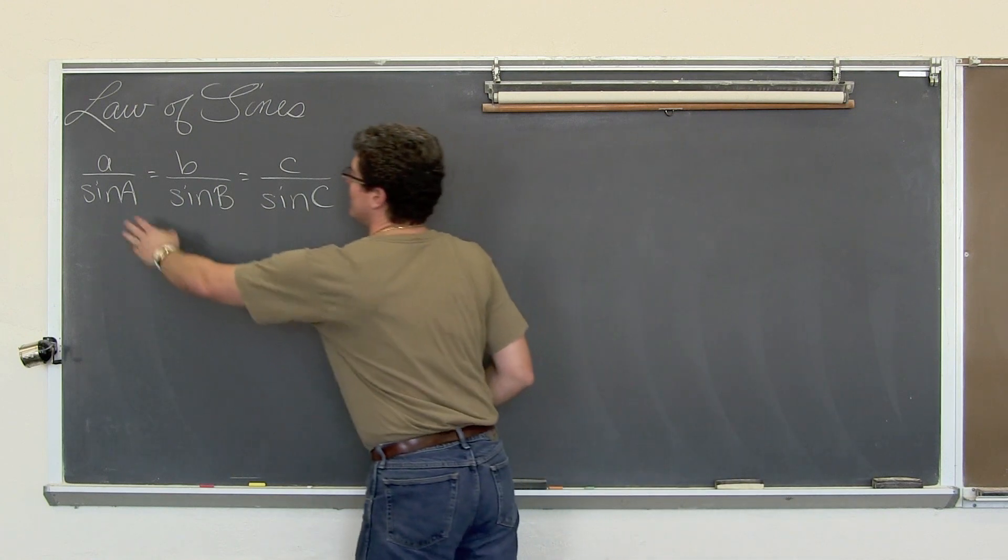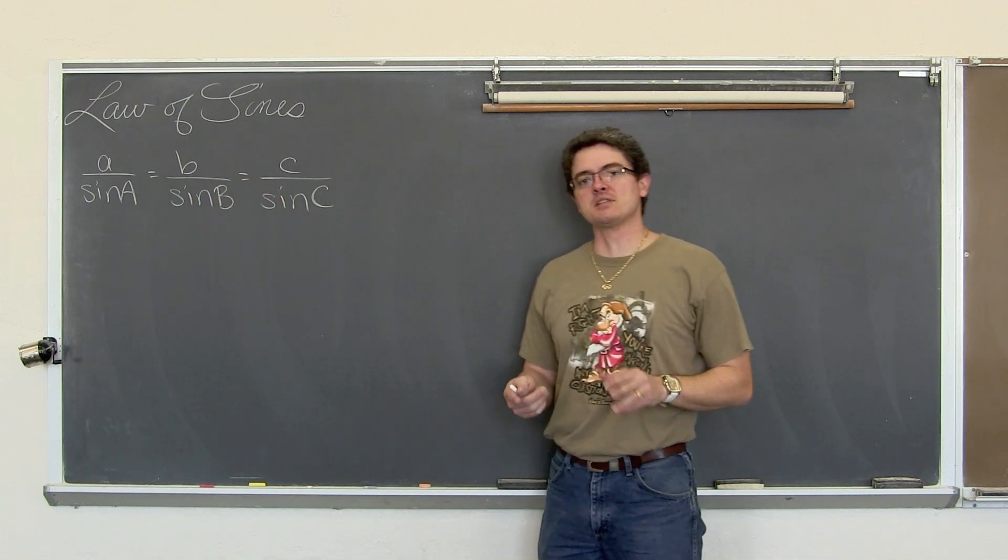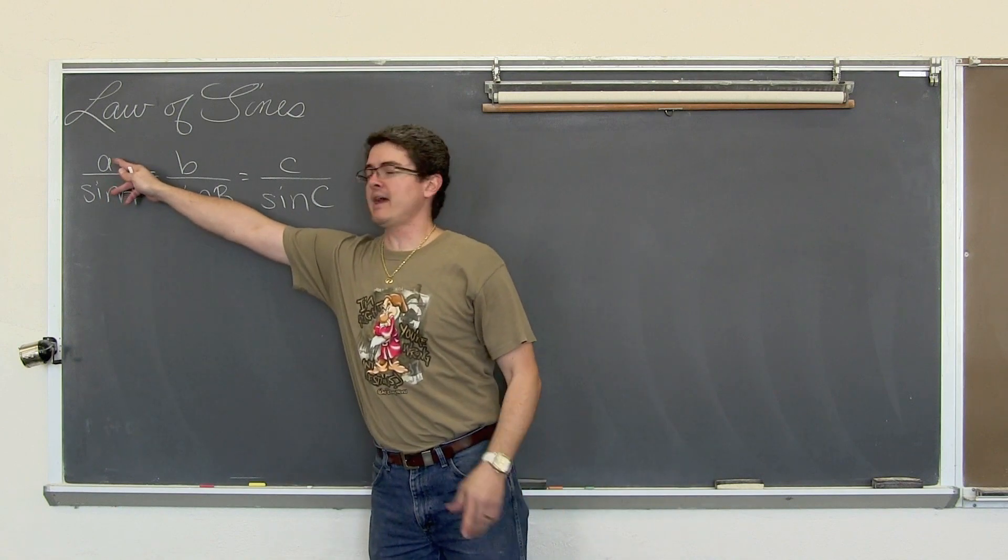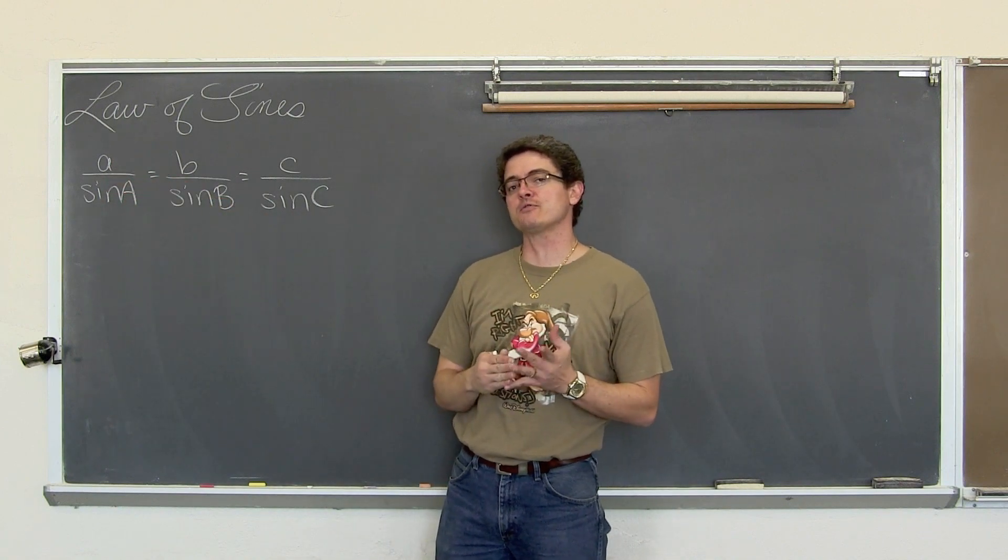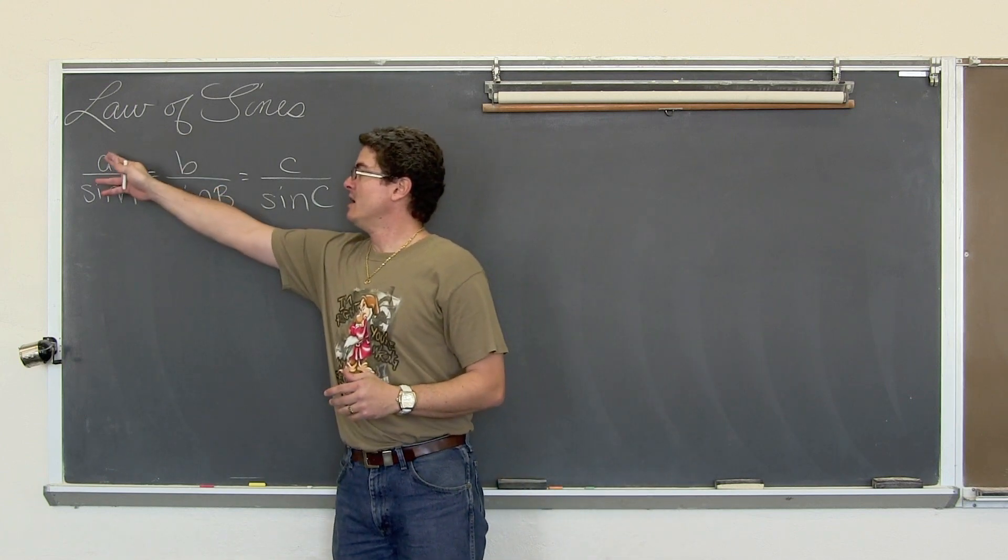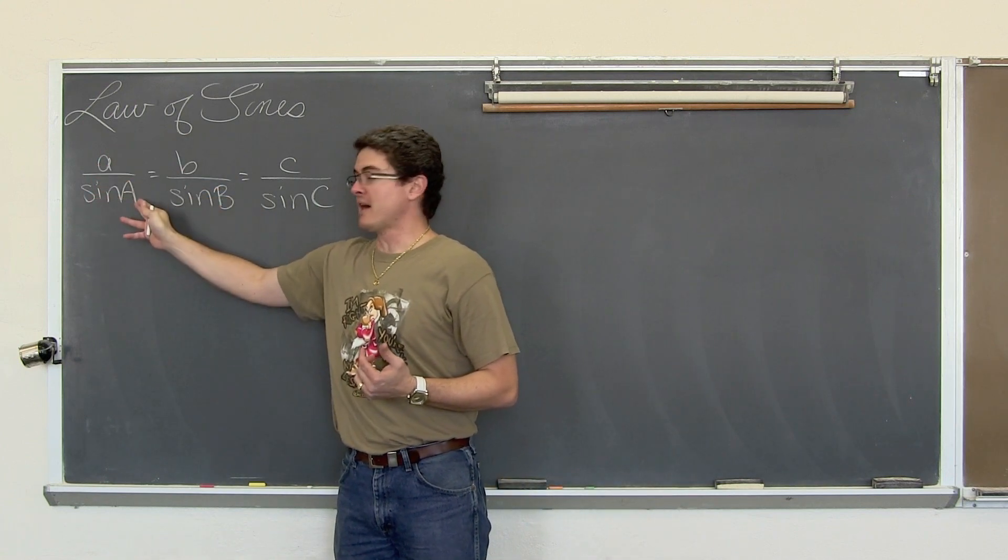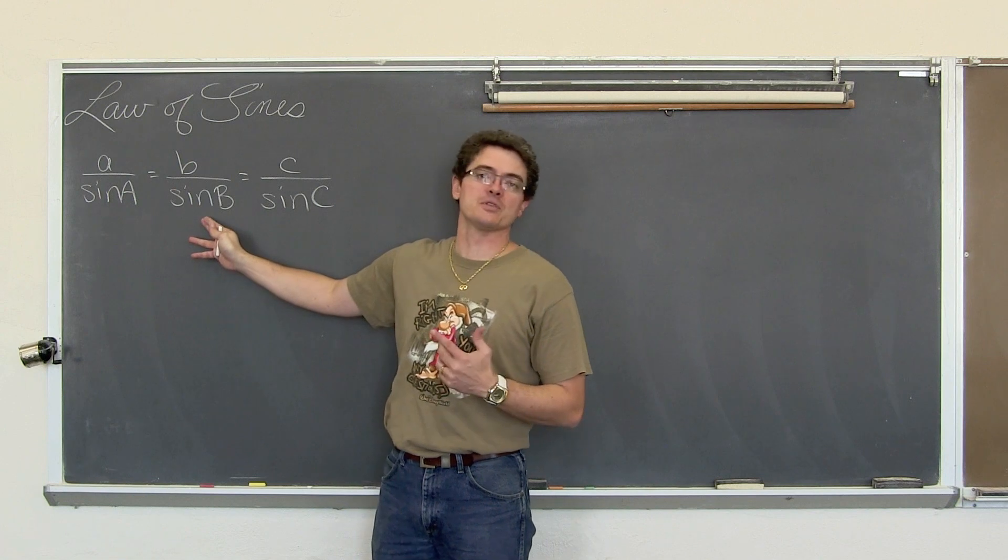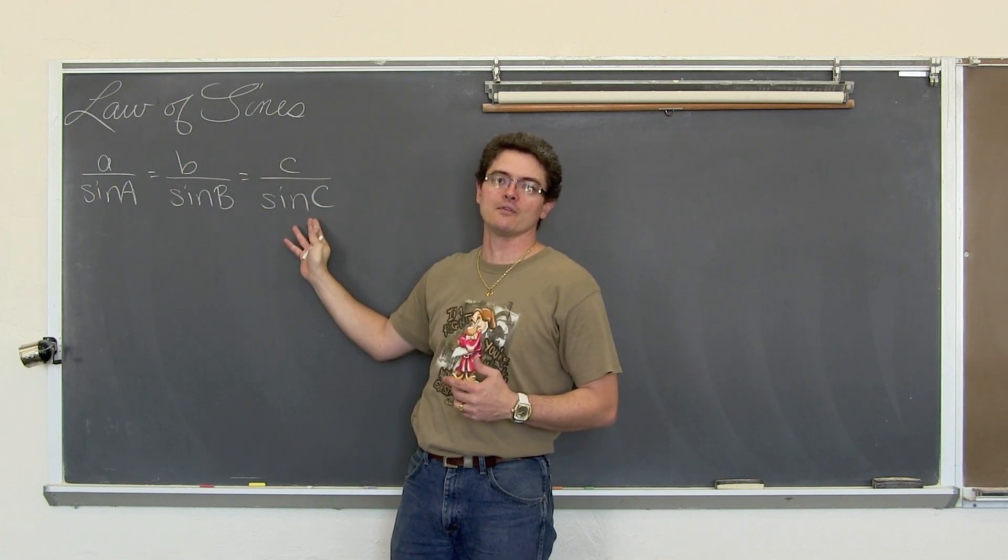These laws allow you to solve for missing sides and angles of non-right triangles or oblique triangles. The first one that we are going to take a look at is the Law of Sines.